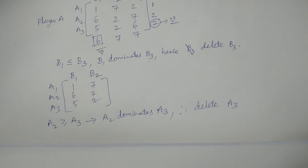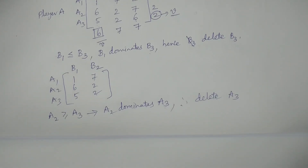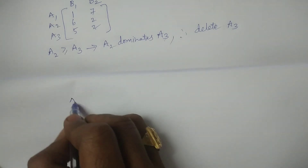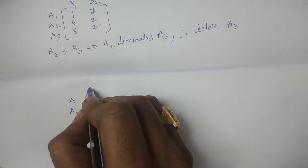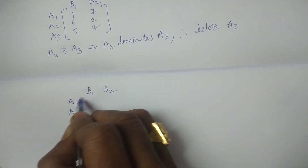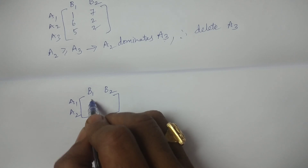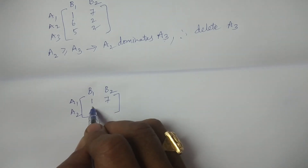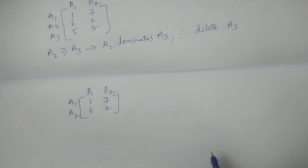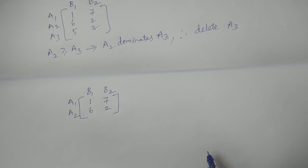What are the remaining strategies in the reduced payoff matrix? The remaining strategies for player A are A1 and A2 only. Writing the reduced payoff matrix: A1 is 1, 7 and A2 is 6, 2. Now the game is reduced — the 3 by 3 game is reduced into a 2 by 2 rectangular game. By using the usual principles and formulas of 2 by 2 rectangular games without saddle point, we can solve the remaining problem.